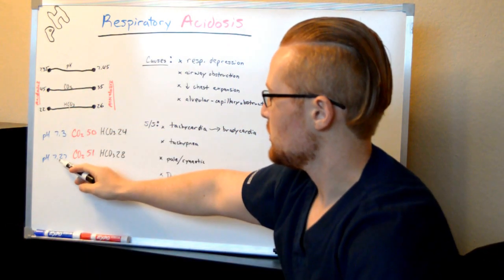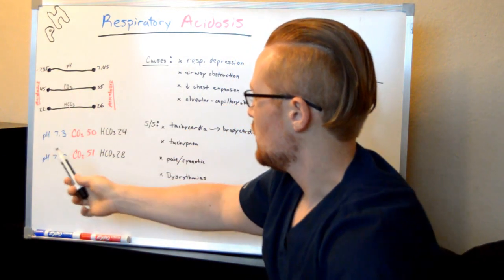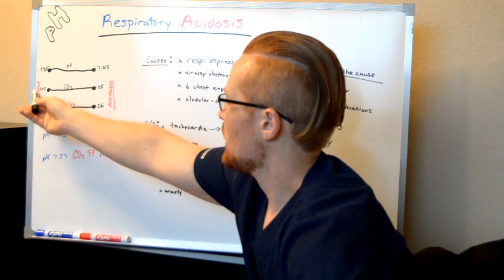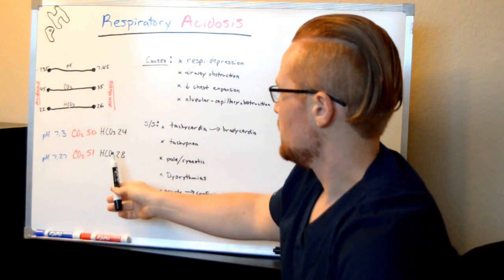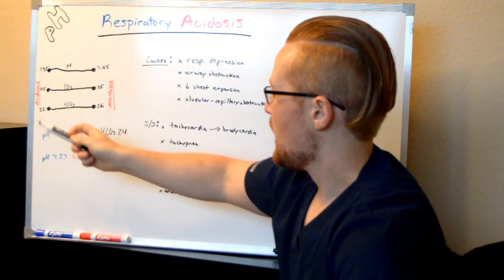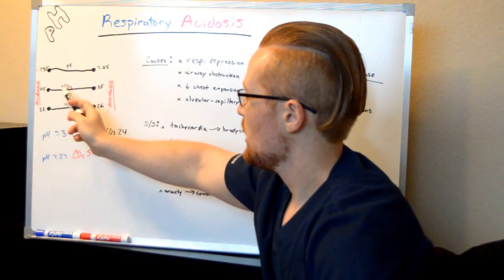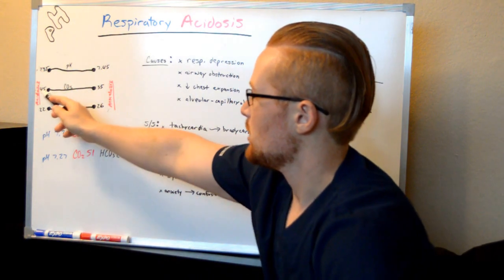Another example, you can see pH is 7.27, that's also on the acidic side. CO2 is 51, which is also on the acidic side. And the bicarb is 28, which is over here on the basic side. The two that match are acidic and acidic, so the patient is acidic and it is due to respiratory causes, the CO2.